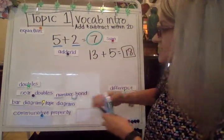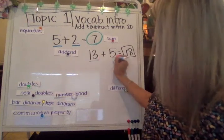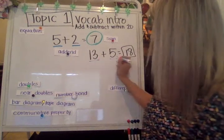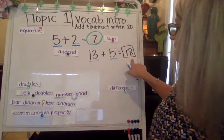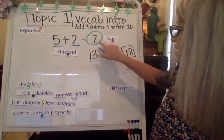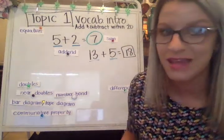So here, these addends — we've got 13 and we've got five. And this over here is called the sum. The sum is 18.